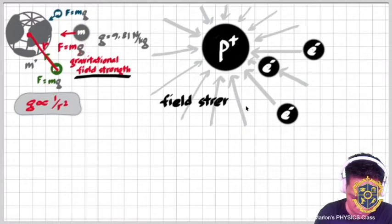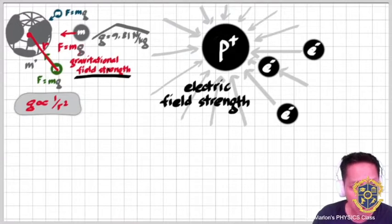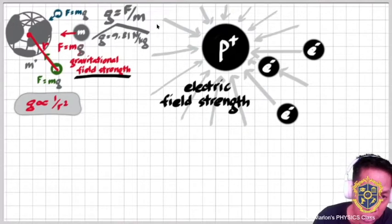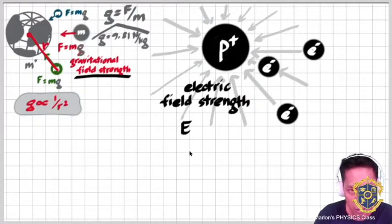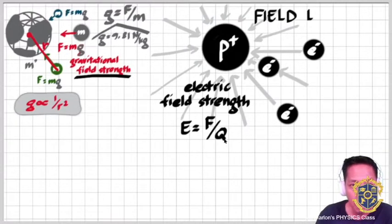We have a field strength here, similar to gravity, but this time instead of calling it gravitational field strength we have electric field strength E. Just as the gravitational field strength G equals gravitational force divided by mass, similarly the electric field strength E equals the electric force divided by the charge.